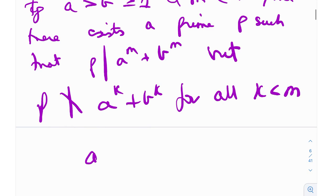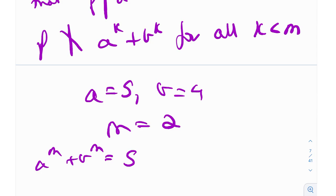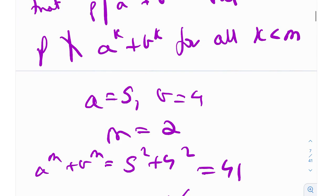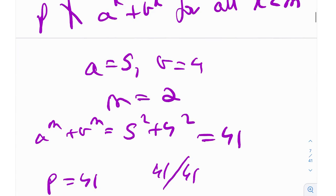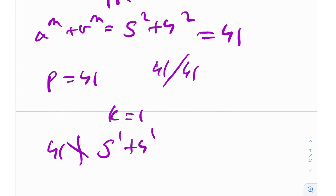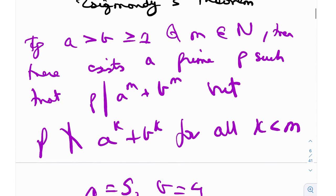For example, let a = 5, b = 4, m = 2. Then a^m + b^m = 5² + 4² = 25 + 16 = 41. Clearly p = 41 is a prime that divides 41. Zsygmondy's theorem then states that p = 41 does not divide a^k + b^k for k less than m. Since k = 1, we check: 41 does not divide 5 + 4 = 9. Indeed, 41 does not divide 9.